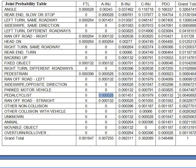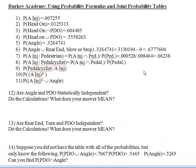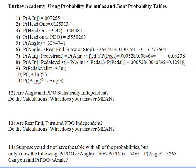We divide by the probability that there was a pedal cyclist involved, which is 0.0040892. The numerator is the same 0.000528, but we're dividing by a smaller number: 0.0040892. Pause the video and calculate. When we divide that out, we get about 0.129 — about a 13% chance.